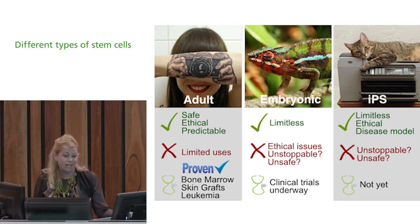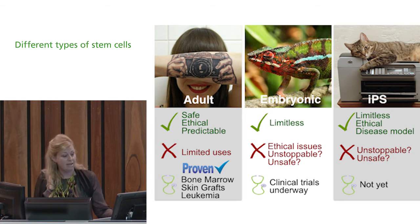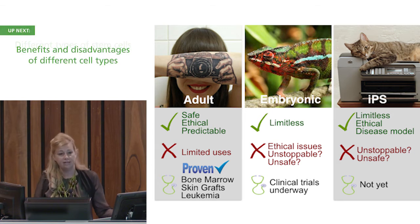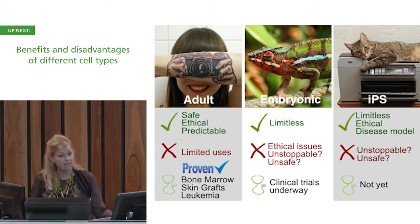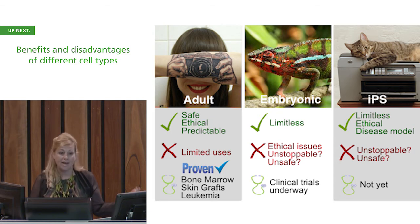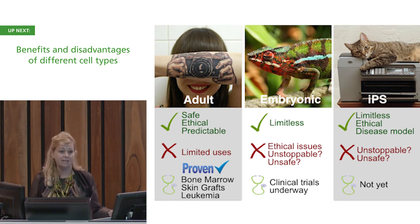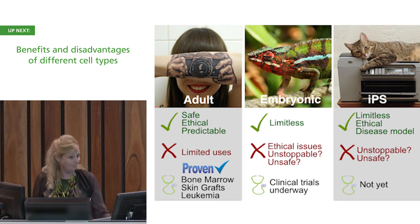A very clever Japanese scientist who won the Nobel Prize for this work invented IPS cells. What they do is take your natural skin cells and deprogram them backwards in a dish to the equivalent status of embryonic stem cells. That's why I think of them as copycat cells.